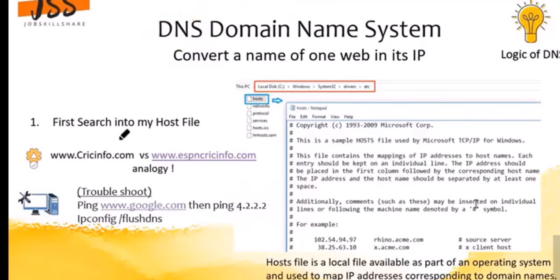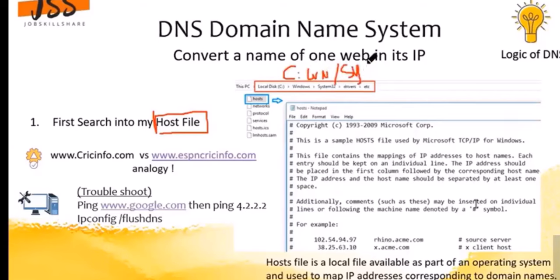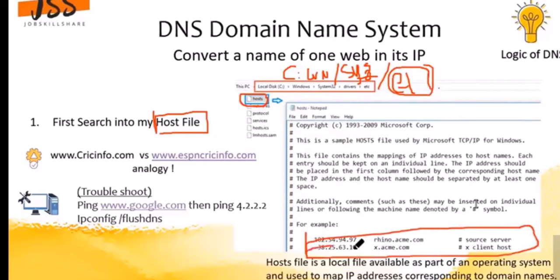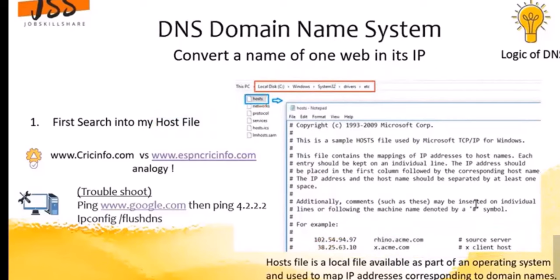When you type www.jobskillshare.org, the first thing your computer is going to do is search in its hosts file, which is located at C:\Windows\System32\etc. Inside this folder you will see the hosts file. You can right-click and open it as Notepad, and you can see multiple addresses mapped with names. The hosts file is a local file available as part of the operating system and is used to map IP addresses corresponding to domain names.